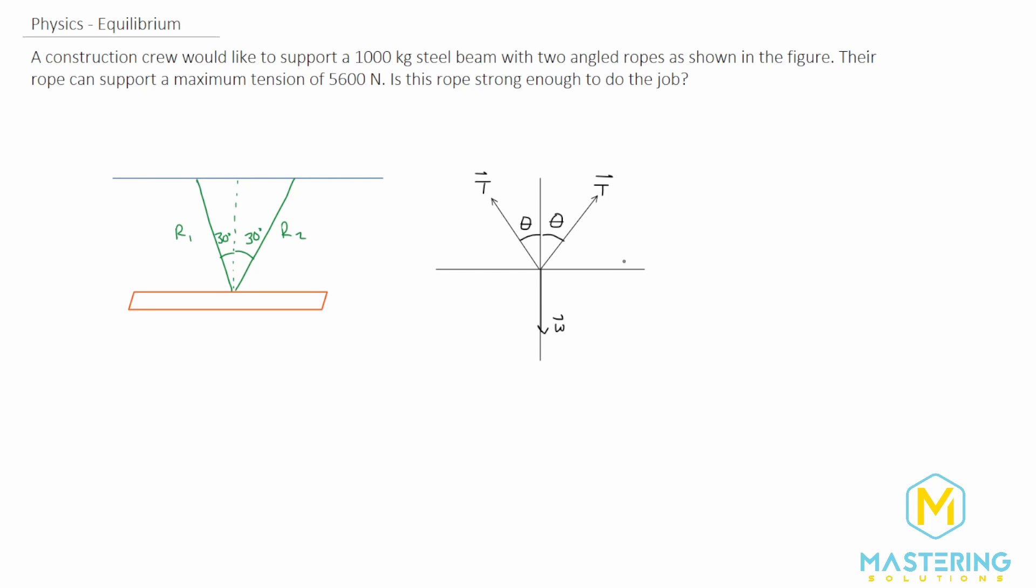So here is the free body diagram, and they tell us a few more pieces of information in the question. They tell us that the mass of the beam is 1,000 kilograms, and then they tell us that the maximum tension, so T_max, is equal to 5,600 newtons.